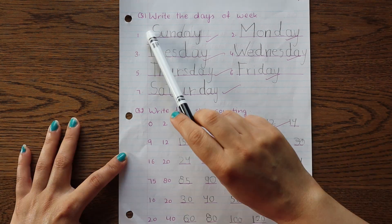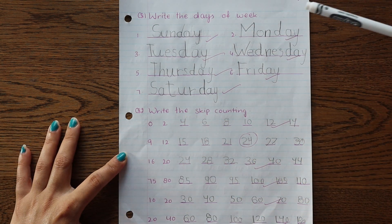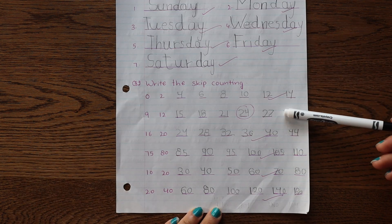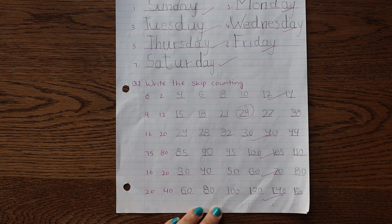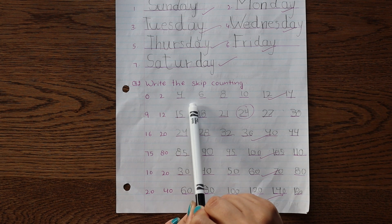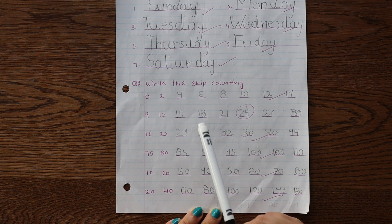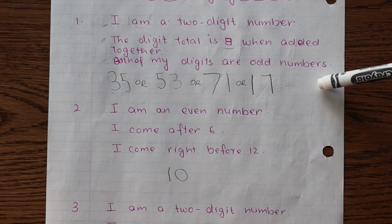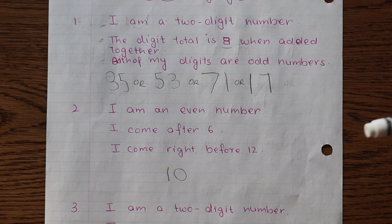Now I will quickly walk you through all the worksheets. Write the days of the week. So here Chia wrote all the days of the week. And below this I gave her skip counting of random numbers like skip counting of two, then skip counting of three, four, five, ten, and twenty.